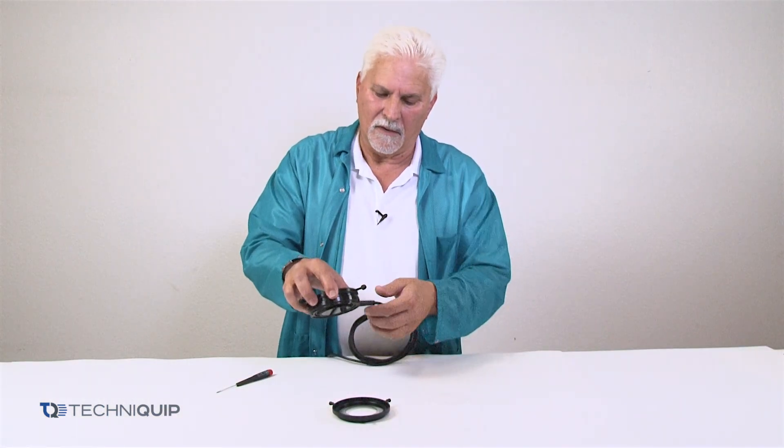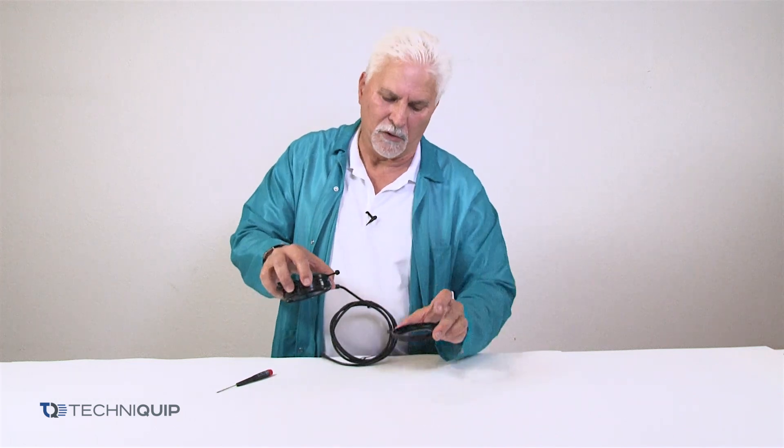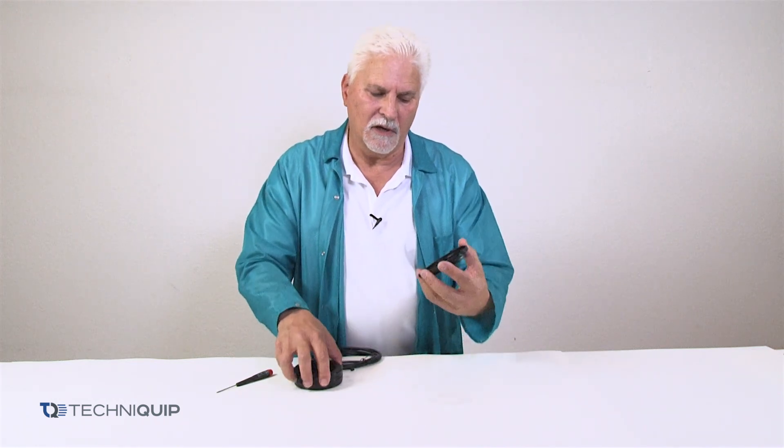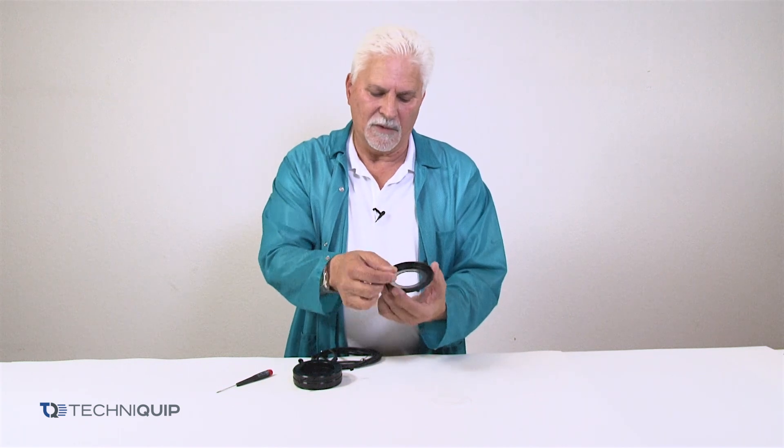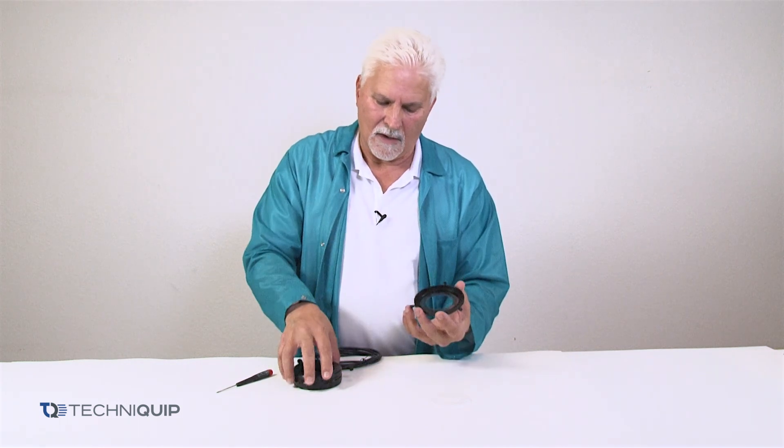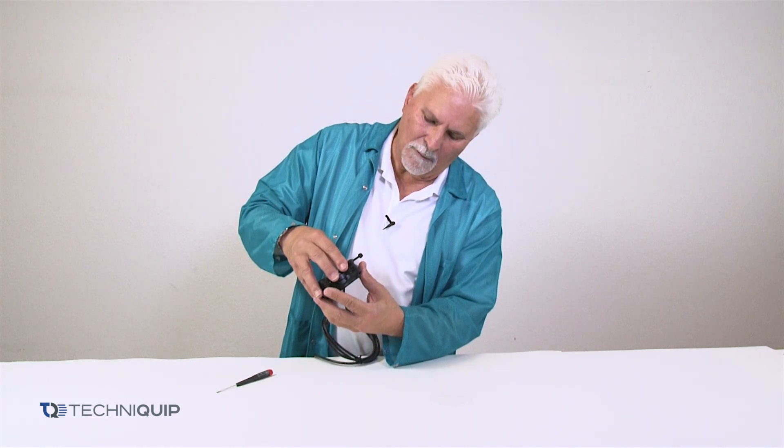Then the last step is to take the circular polarizer and you'll notice it has three small knurled knobs and it goes up onto the body.